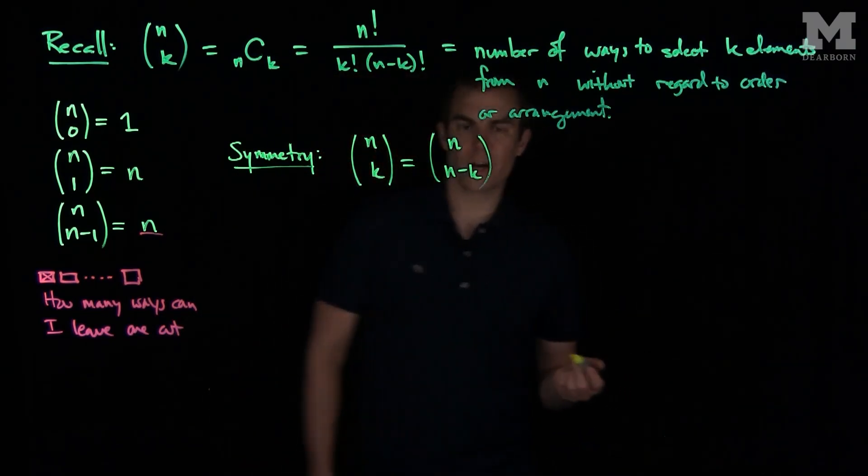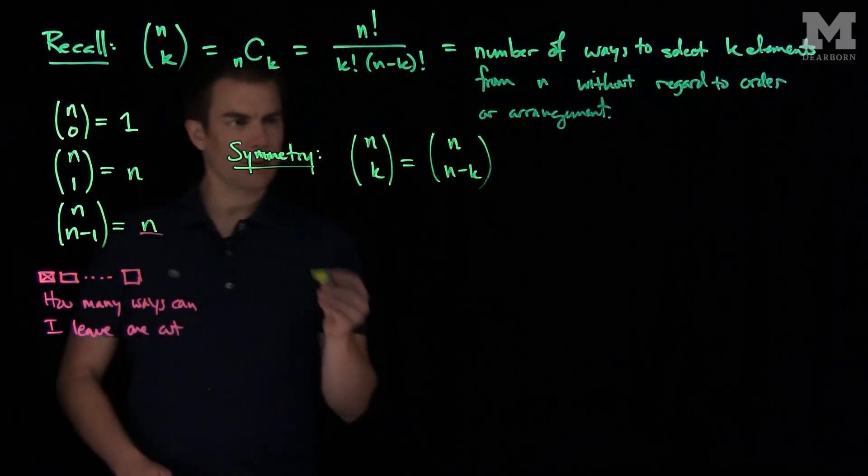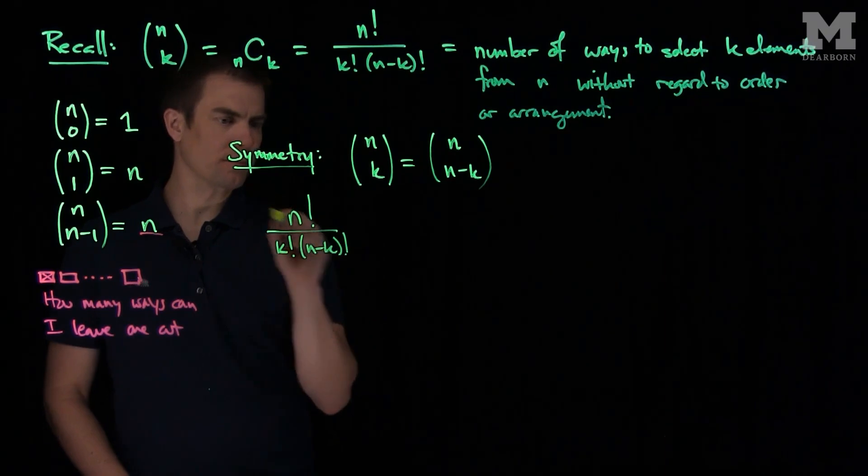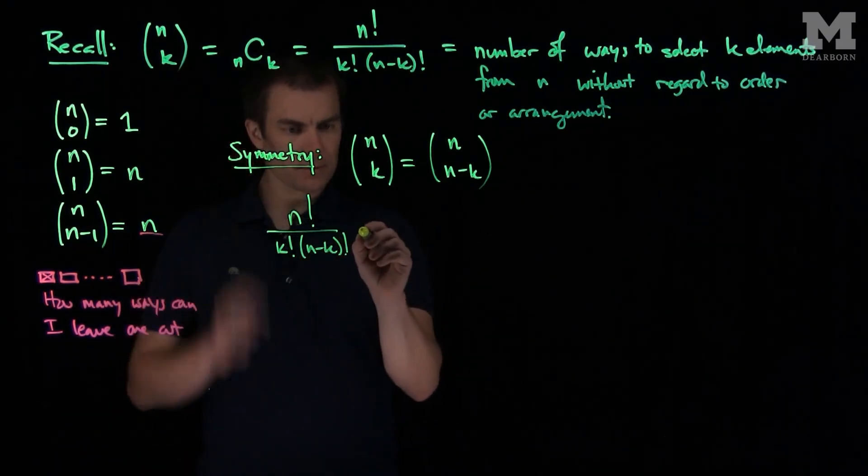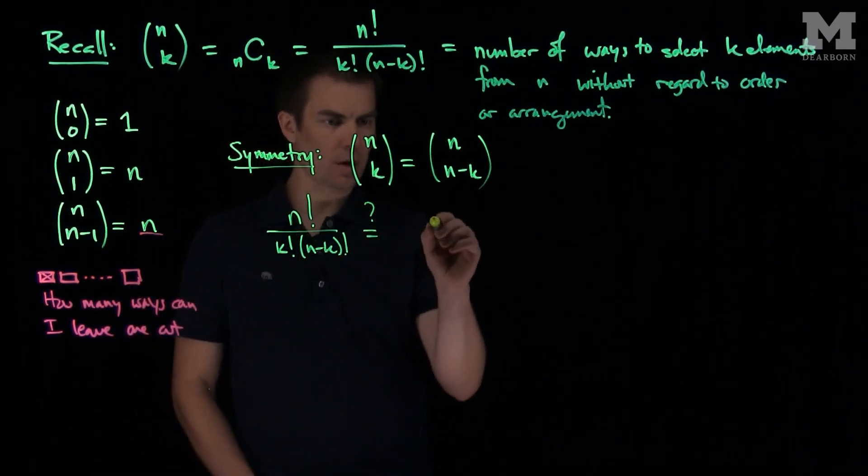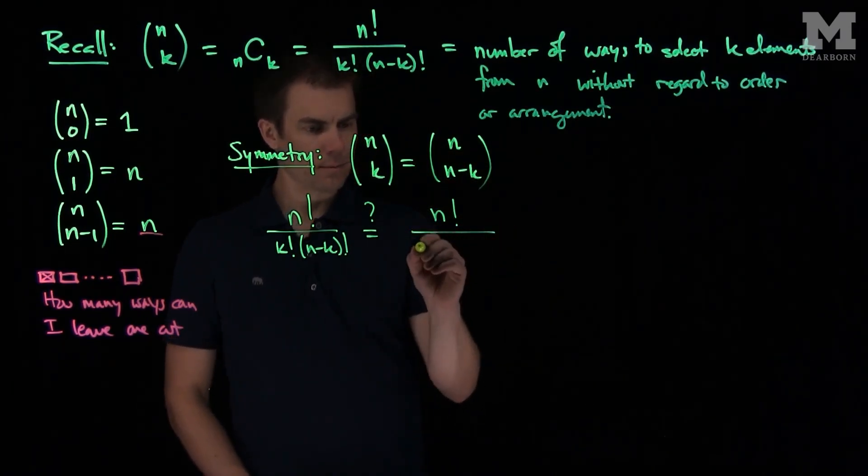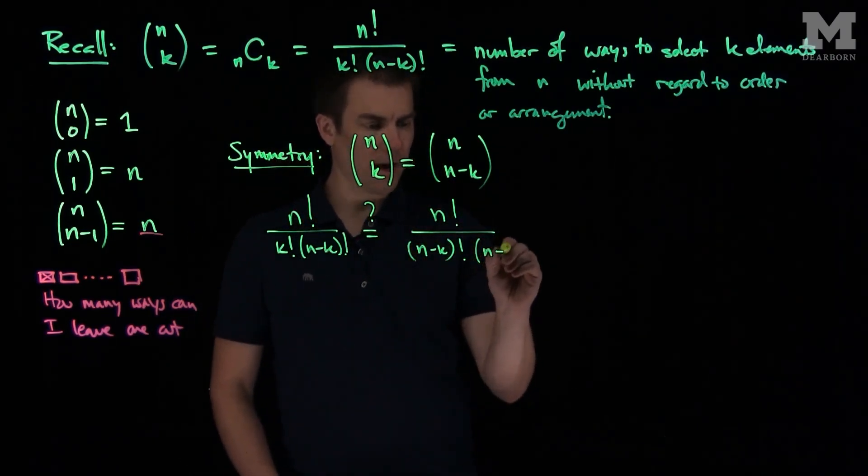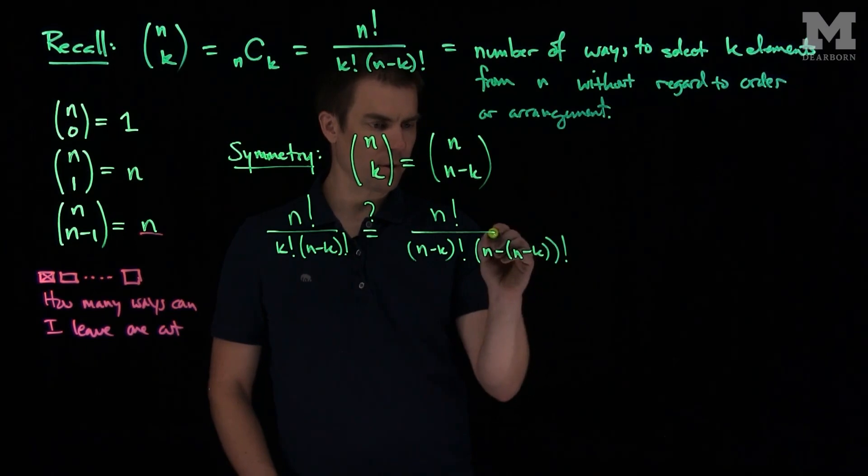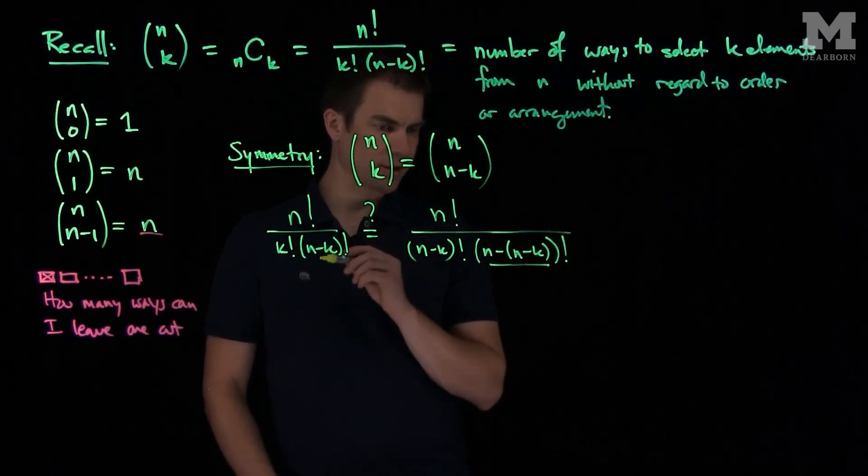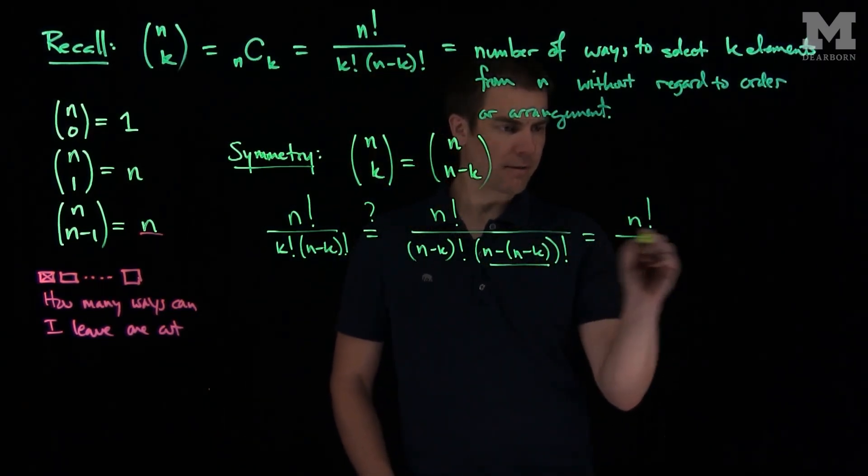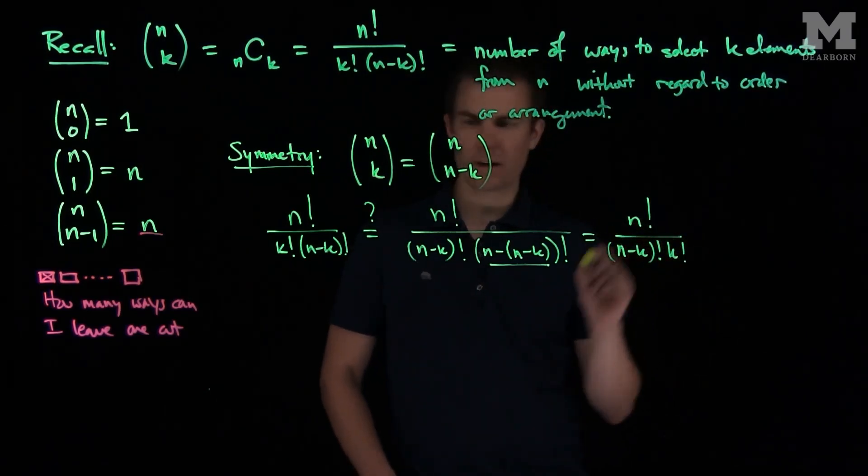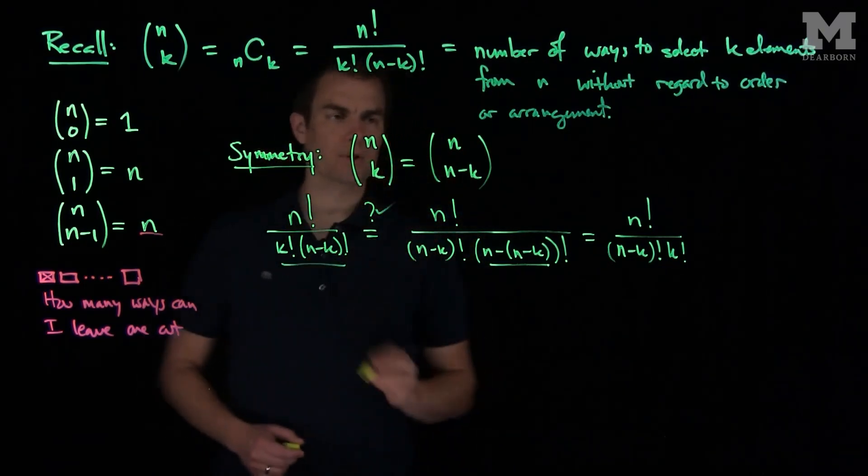And let's think about this in a variety of different ways. We can do it algebraically. This is n factorial over k factorial times (n-k) factorial. And this over here will be n factorial over (n-k) factorial times (n-(n-k)) factorial. Well, we see that this expression is exactly equal to k, so this is actually equal to n factorial over (n-k) factorial times k factorial, and indeed they are the same. So the symmetry principle is true.